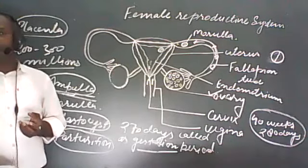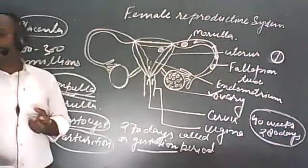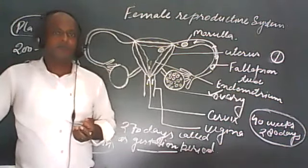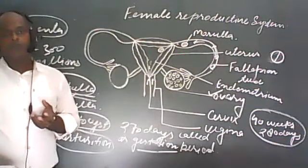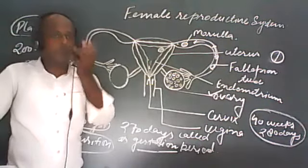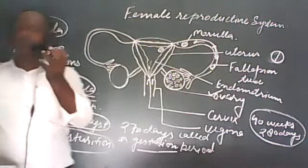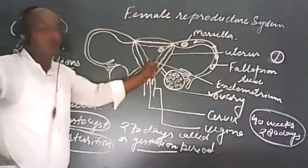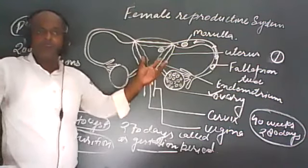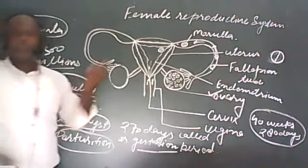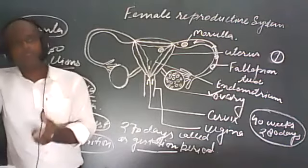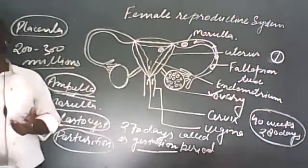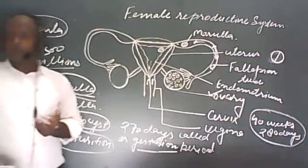The menstrual cycle is a series of changes that occur in the reproductive system of the female body after every 28 days. The ovary and the uterus prepare themselves for receiving the fertilized egg.